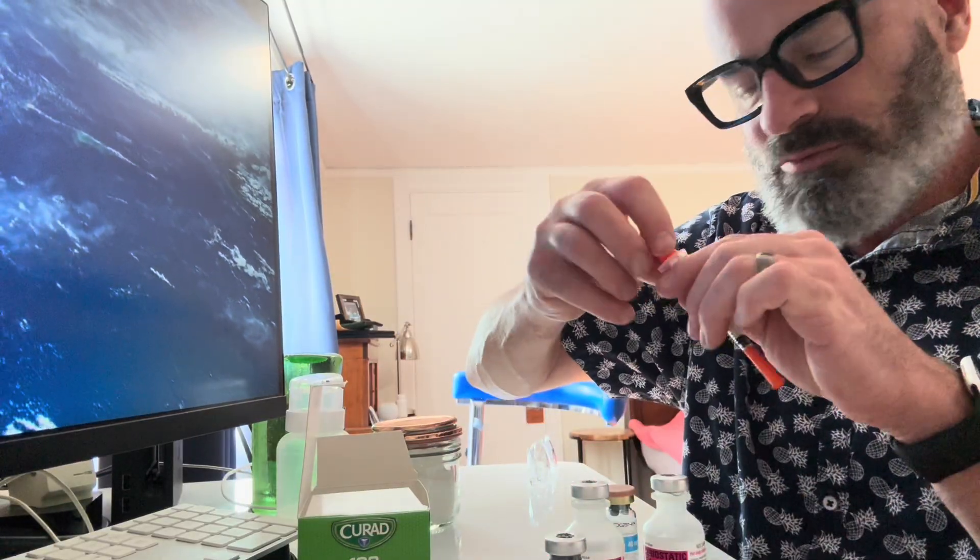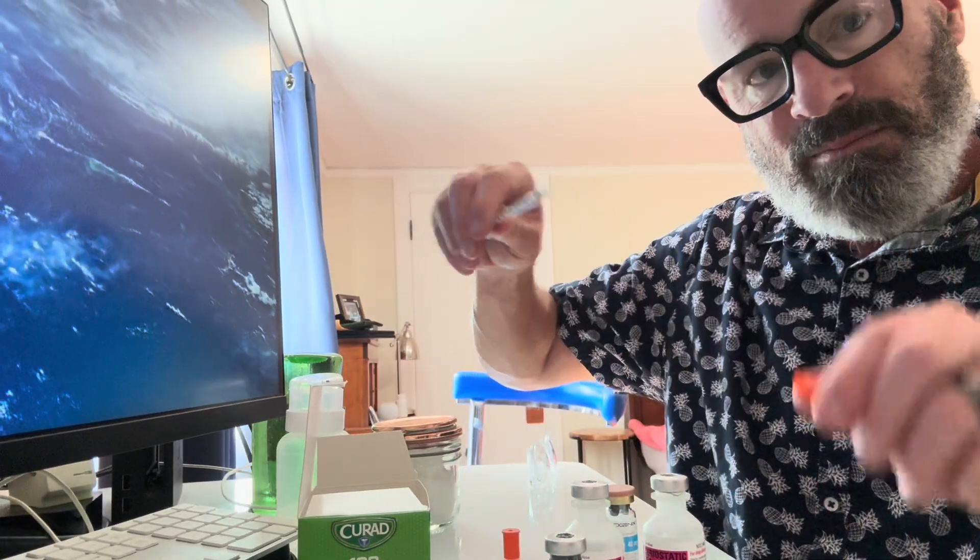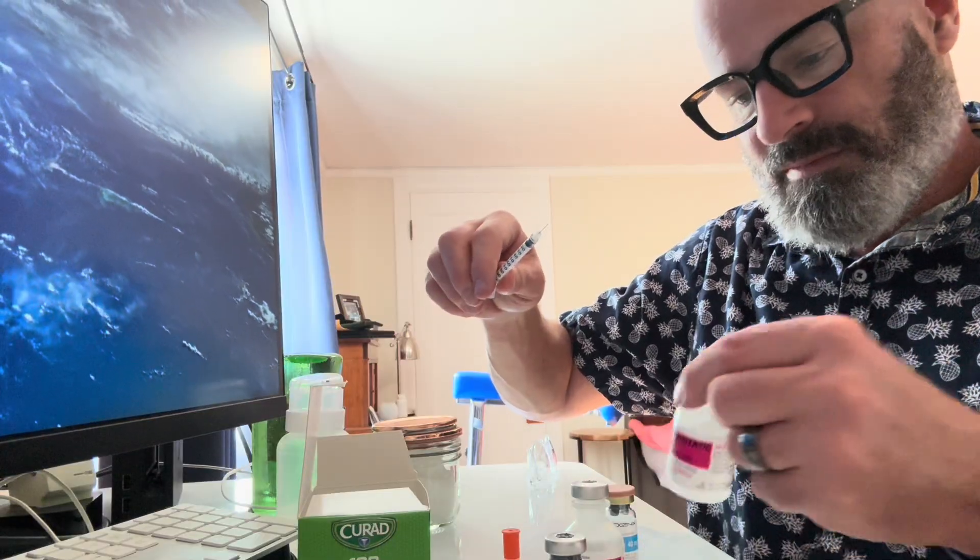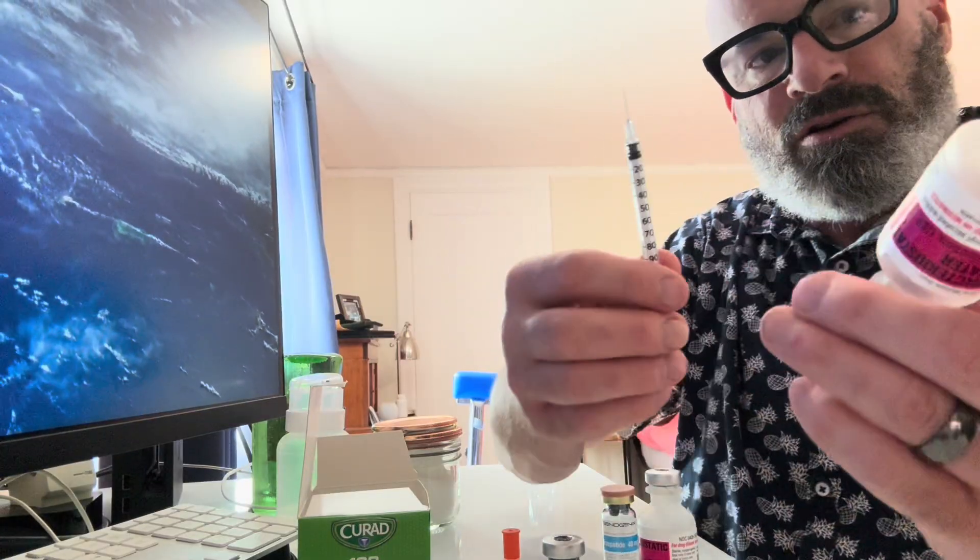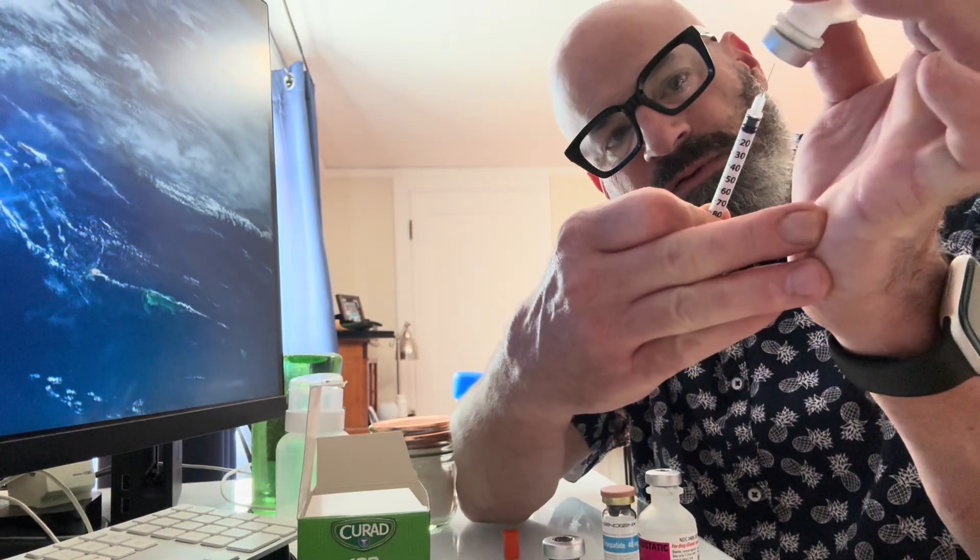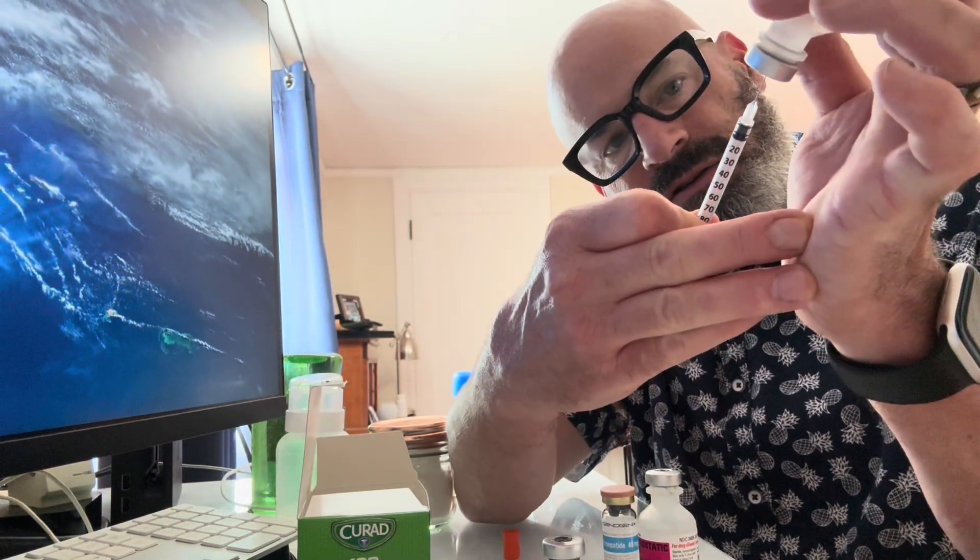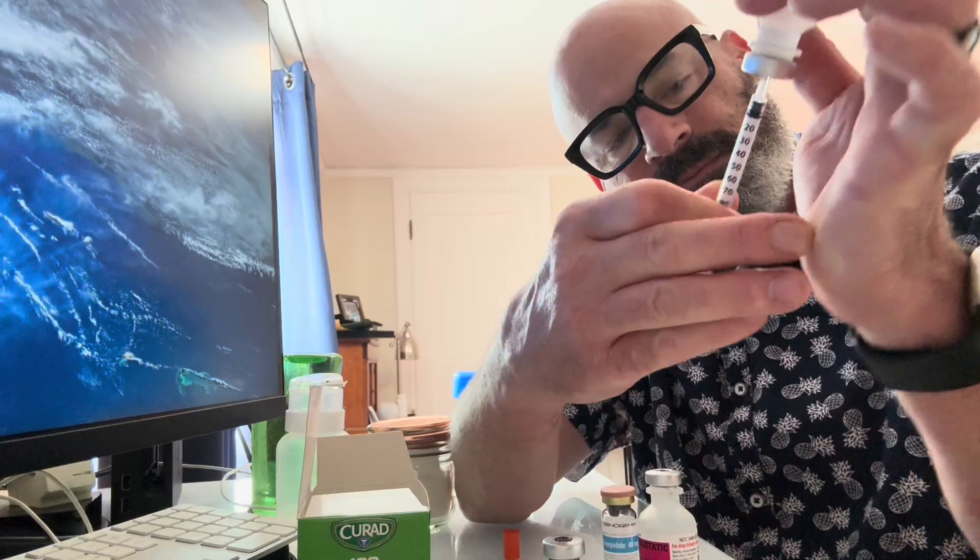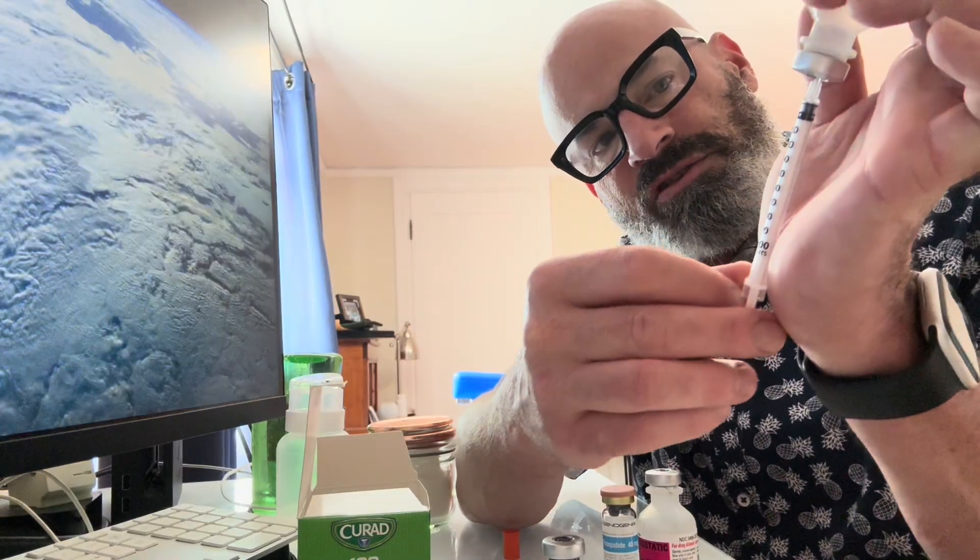And for this one in particular, I'm just going to use one cc of bacteriostatic water. Just hold it upside down like this. And then using the stage formation hand, you insert your needle. Then you hold the syringe against your palm here.